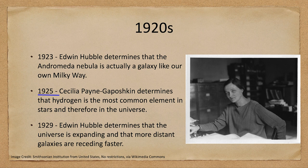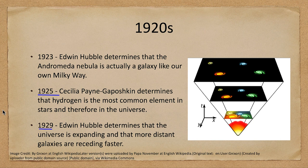Before Payne-Gaposchkin's work, we figured that stars would be made up of the same things we have here on Earth. Her calculation showed us that hydrogen is actually the most common element. Then in 1929, Edwin Hubble gave us the idea that the universe was expanding — that galaxies are moving apart, with the most distant ones receding fastest. We had previously thought the universe was static, but now we understood it was actually changing and expanding over time.